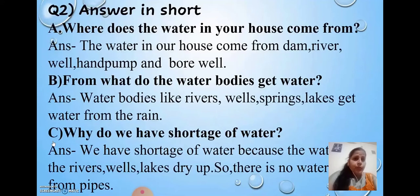come from? Answer: The water in our house comes from dam, river, well, hand pump, and bore well. Number B: From what do the water bodies get water? Answer: Water bodies like rivers, wells,